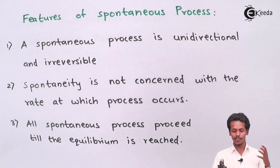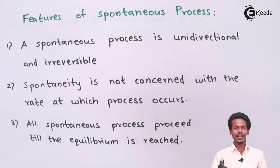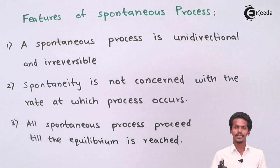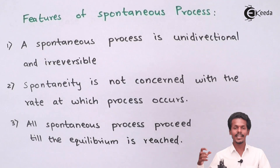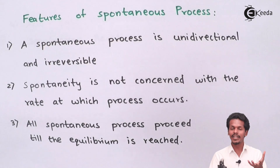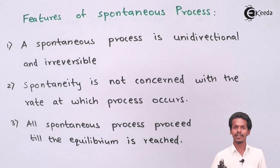The next feature is that spontaneity is not concerned with the rate at which the process occurs. For example, when two glasses of water — one hot and one cold — are placed side by side, heat will flow from the hot body to the cold body. Whether this happens rapidly or slowly does not matter; the process is still spontaneous. The rate of heat transfer does not determine whether a process is spontaneous.